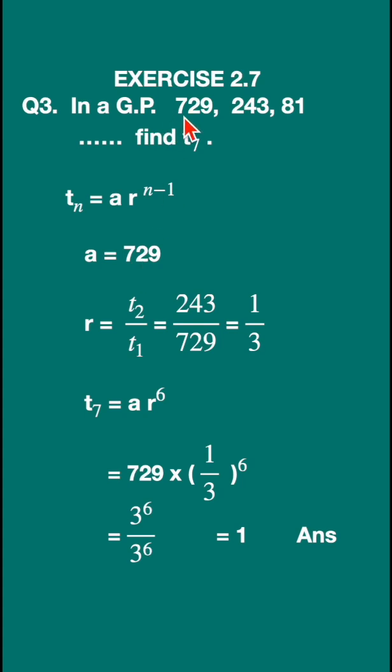Let us write down: a is the first term, 729. The ratio r will be second term divided by first term, t2/t1. So 243/729 = 1/3.